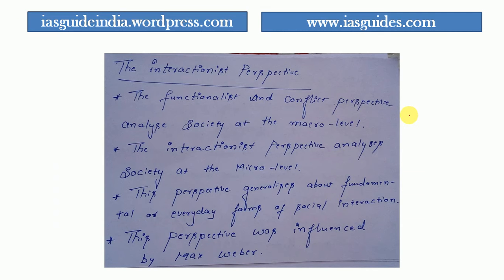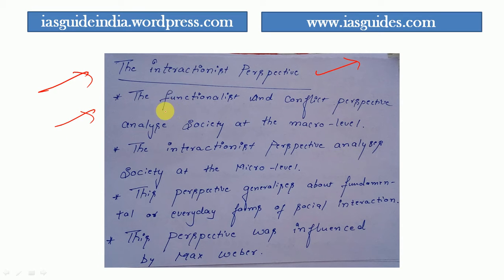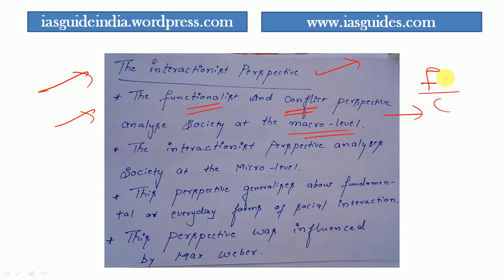In this part three we'll be discussing the third concept: the interaction perspective. This perspective is quite different when compared to the previous two perspectives. The functionalist perspective and conflict perspective both analyze society at the macro level, whereas the interaction perspective analyzes society at the micro level.